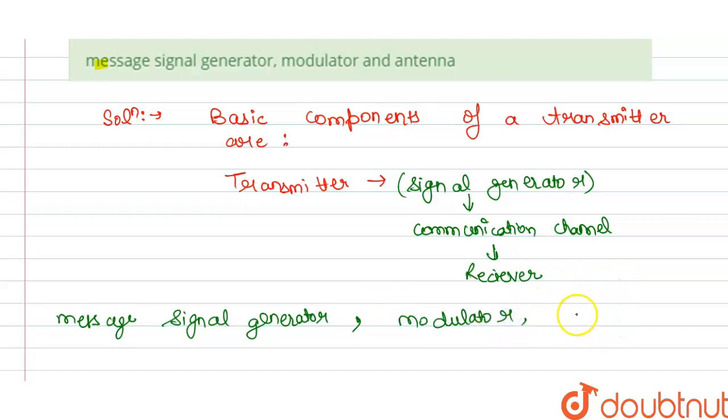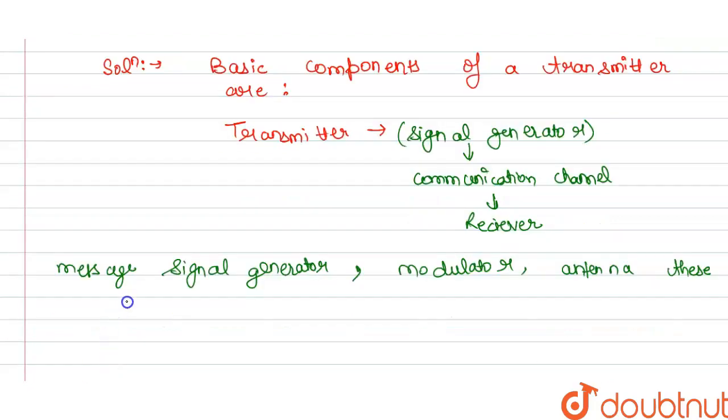And for receiving the signals, or we can say that message signals, we need an antenna. So these are the basic components.